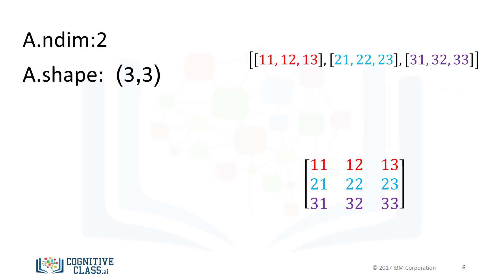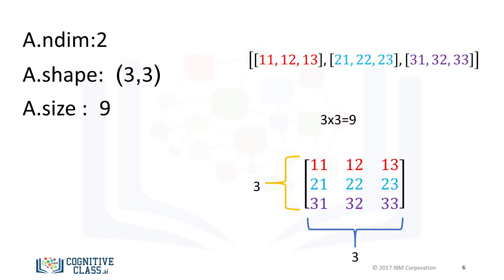We can also use the attribute size to get the size of the array. We see there are 3 rows and 3 columns. Multiplying the number of columns and rows together, we get the total number of elements — in this case 9. Check out the labs for arrays of different shapes and other attributes.